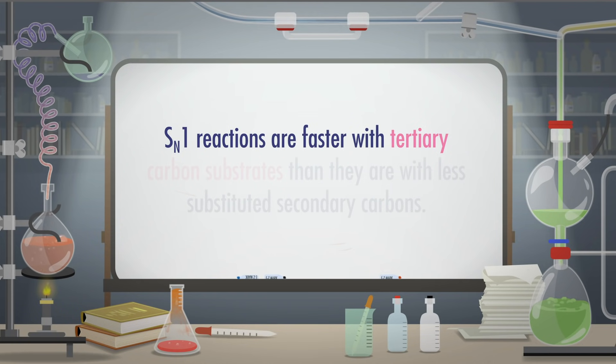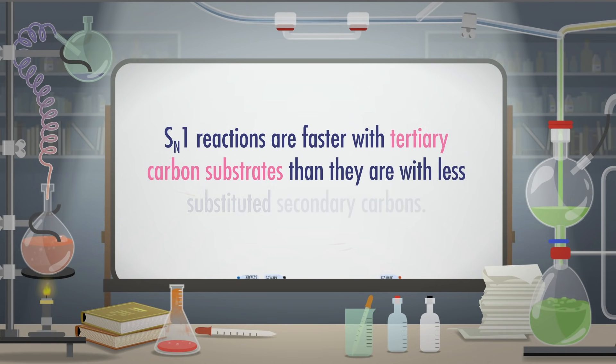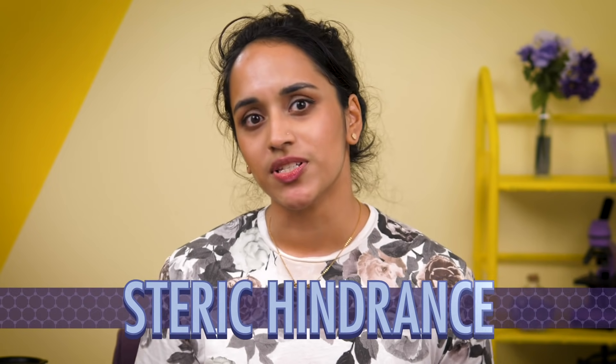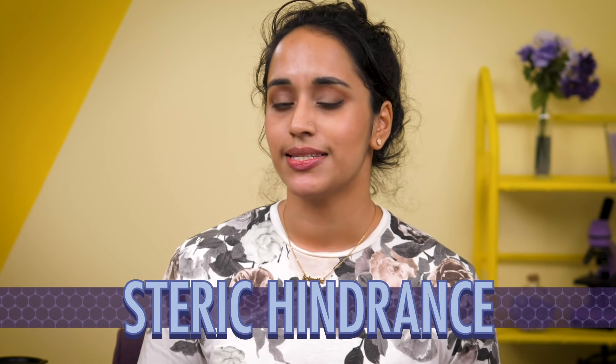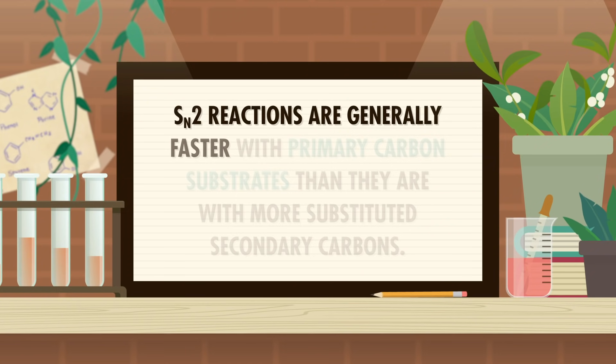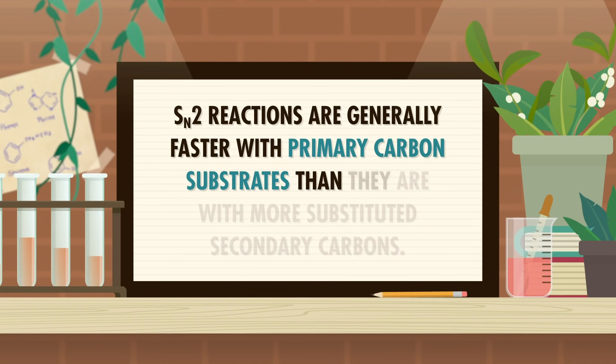Because of this, all things being equal, SN1 reactions are faster with tertiary carbon substrates than they are with less substituted secondary carbons. In the SN2 mechanism, the nucleophile attacks the substrate and simultaneously kicks out the leaving group. So steric hindrance plays an important role, and the opposite trend happens. SN2 reactions are generally faster with primary carbon substrates than they are with more substituted secondary carbons. The key to substitution reactions is, in a chemical reaction between a substrate and a nucleophile, the nucleophile acts as an electron donor – the nucleophile causes substitution.